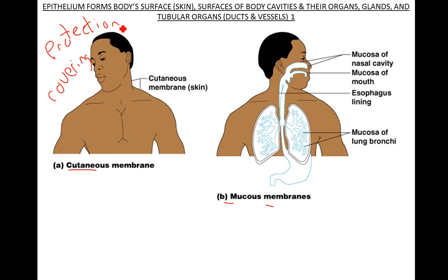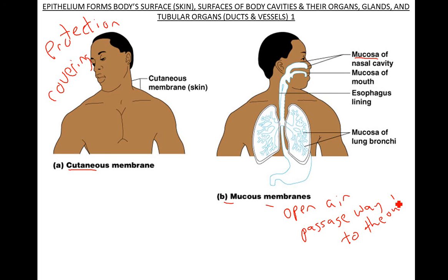A mucous membrane — that's a name for the membrane, it's called mucosa. Let's say your nasal mucosa, the mucosa of the bronchi. One of the things about it is it's actually an open passageway to the outside. Your lungs — that's open to the outside. The membrane in here will have fluid, there's going to be mucus for lubrication and protection, but then there are actually sacs here. When we get to the respiratory system, we'll talk about that. This is your second of your three types of epithelial membranes.